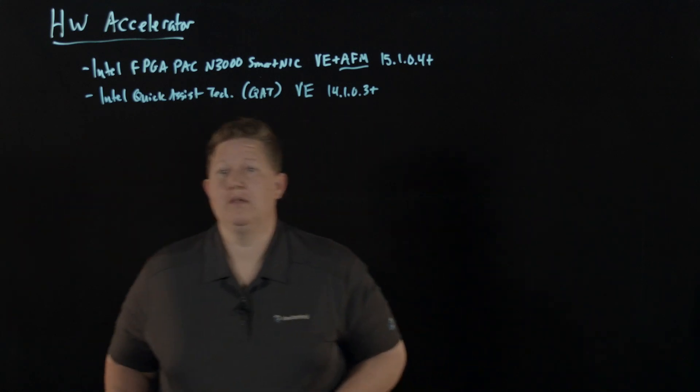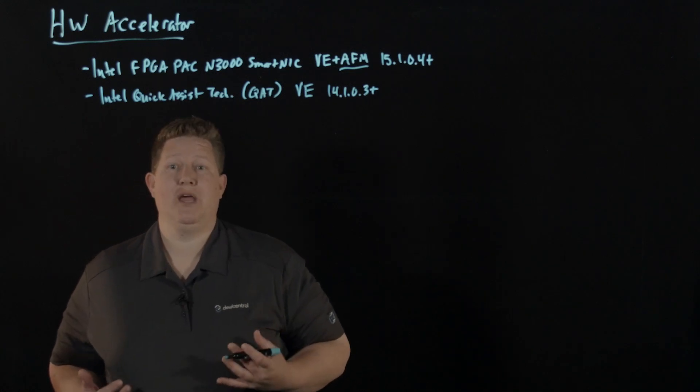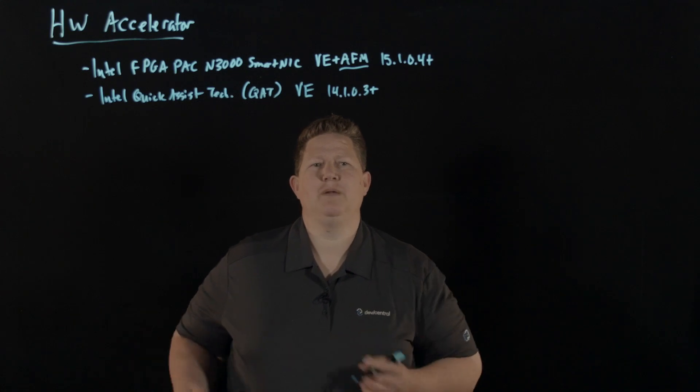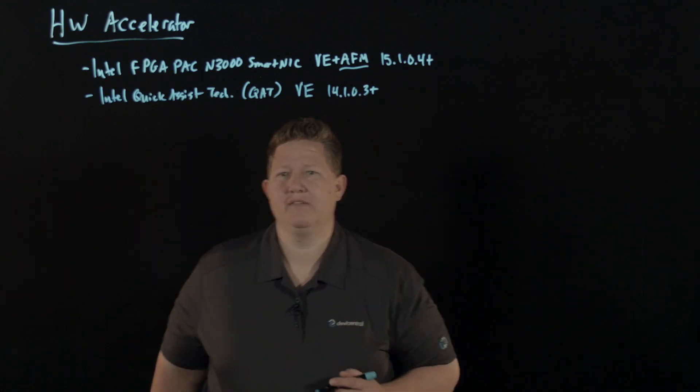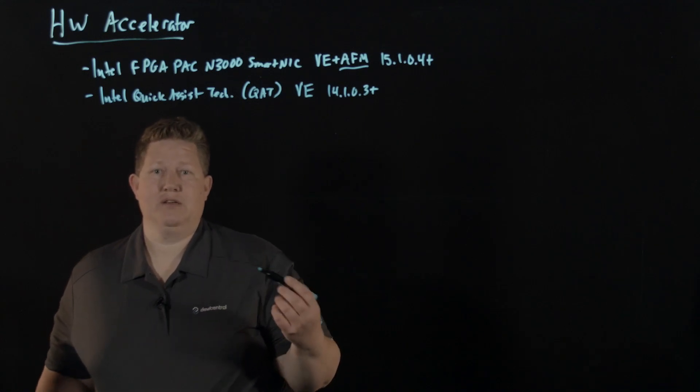Let's do the SmartNIC first. The SmartNIC from Intel has an FPGA in it that can be programmed to perform specific tasks, similar to the TurboFlex FPGA profiles that you have in BigIP I-Series appliances. The first use case that we'll do is DDoS mitigation.